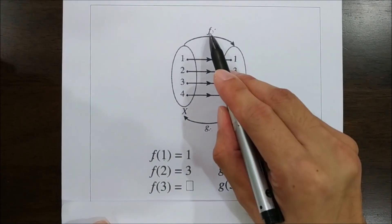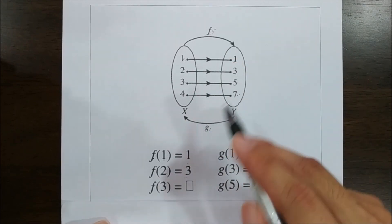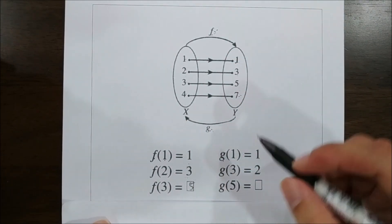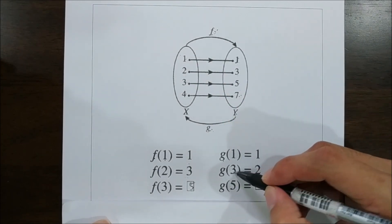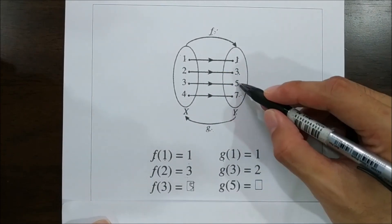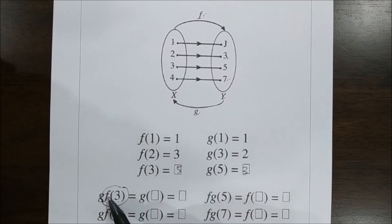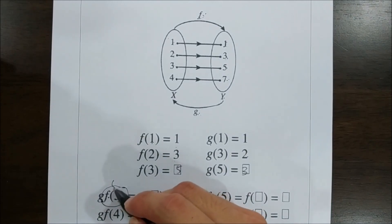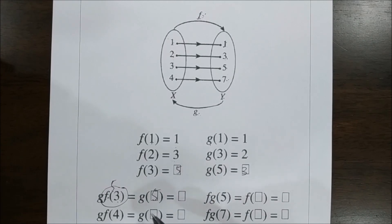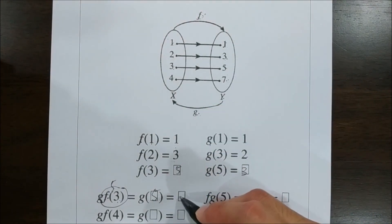We fill in the blanks: f(1)=1, f(2)=3, f(3)=5. For function g: g(1)=1, g(3)=2, g(5)=3. Now for the composite function gf(3): f(3)=5, then g(5)=3. So gf(3) = 3.